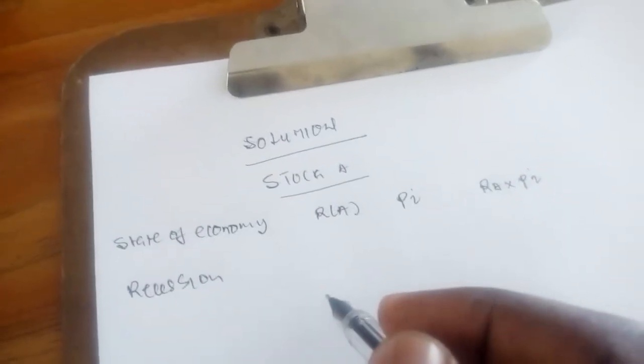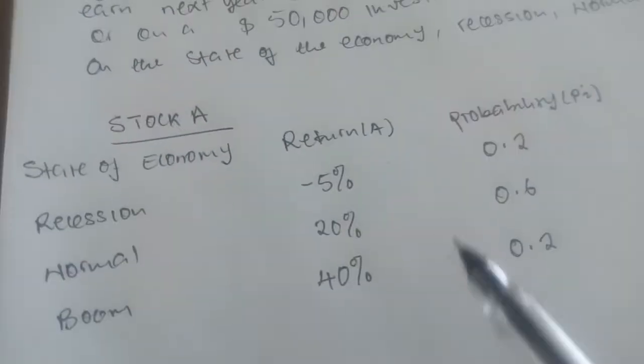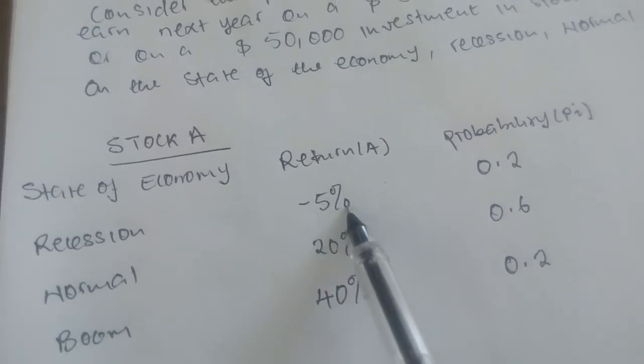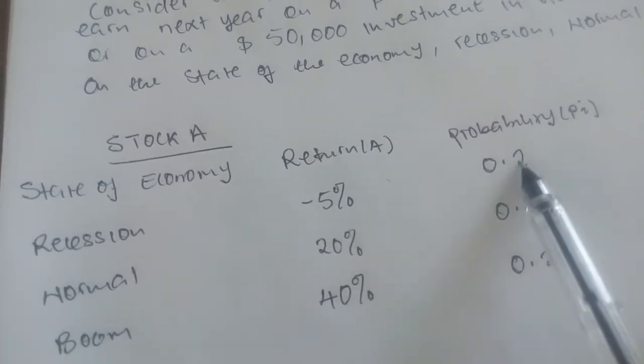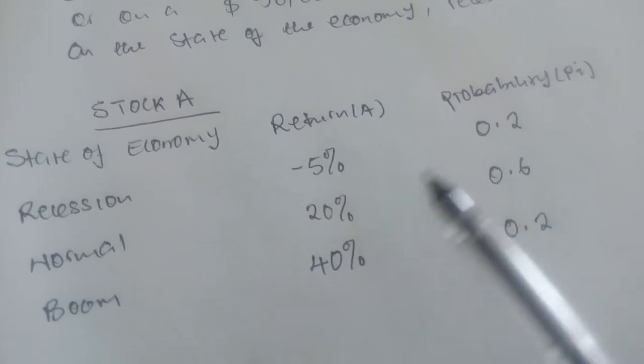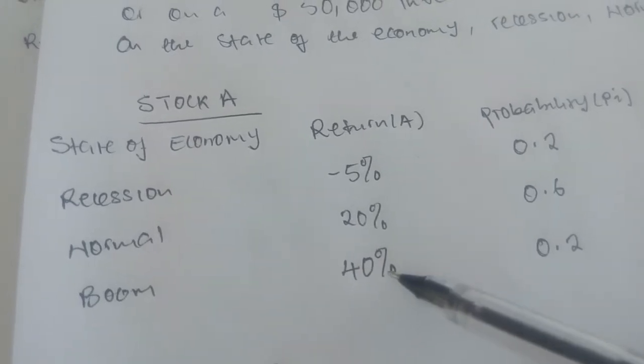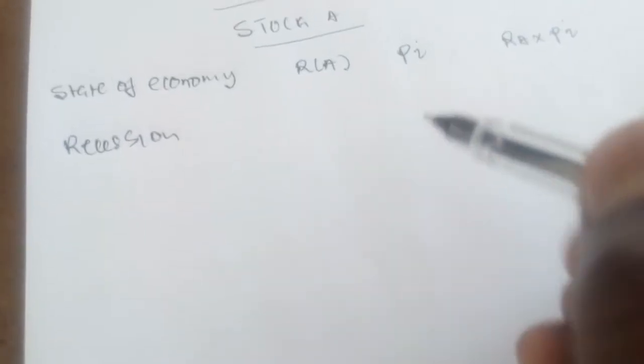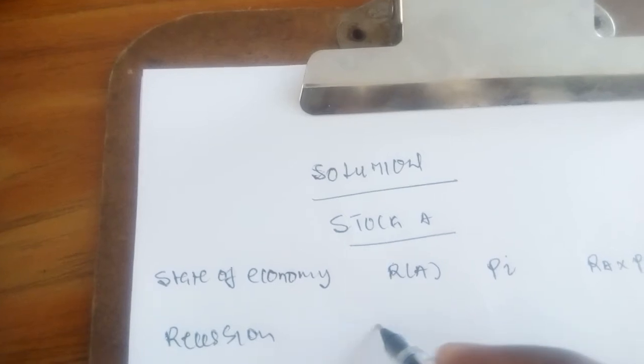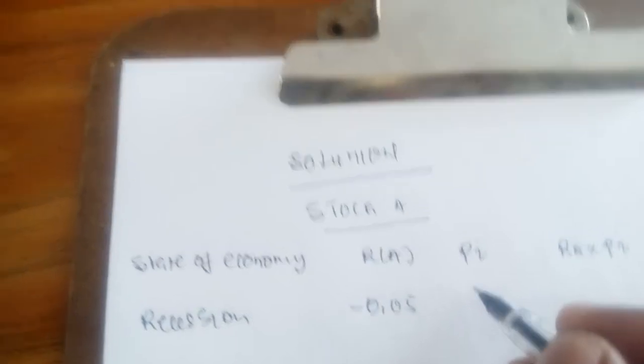We were told that if the economy is in recession, we have negative 5% return and 20% probability of receiving the negative 5% return. I will convert these percentages into decimals so that we easily follow and understand. After converting, negative 5% becomes negative 0.05, and the probability remains 0.2.